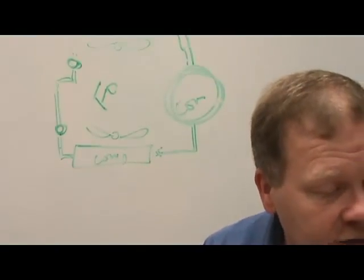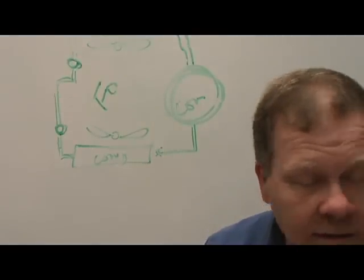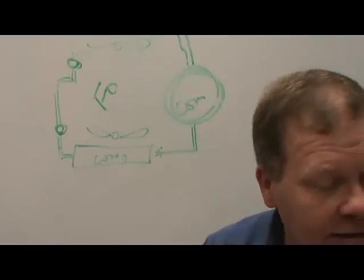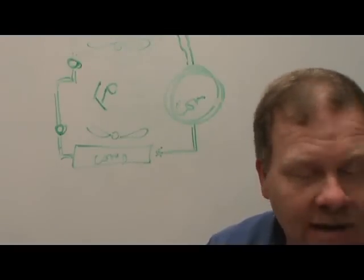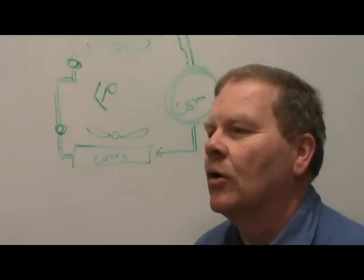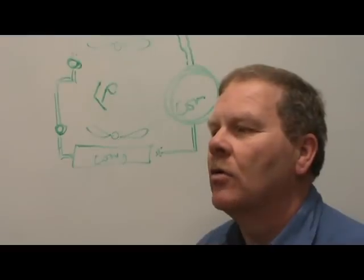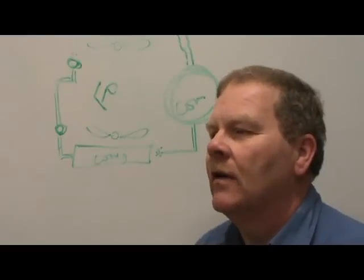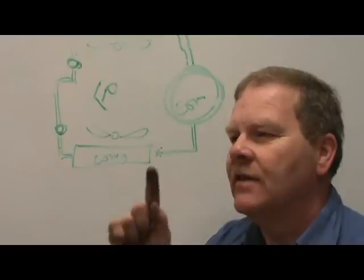Two technicians are discussing orifice tubes. Technician A says orifice tubes are usually placed close to the evaporator inlet — he's right. Technician B says the orifice tube is placed close to the condenser in some vehicles — he's right too. Like an early 90s Chevrolet where you've got to pull the grille and the orifice is right there near the condenser outlet.